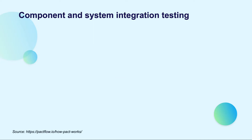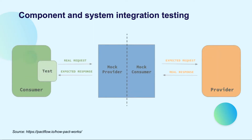There is one solution to handle the integration testing problem: contract testing. It's a methodology for ensuring that two separate systems, such as two microservices, are compatible with one another. It captures the interactions and exchanges between each service and stores them in a contract, then verifies that both parties adhere to it.